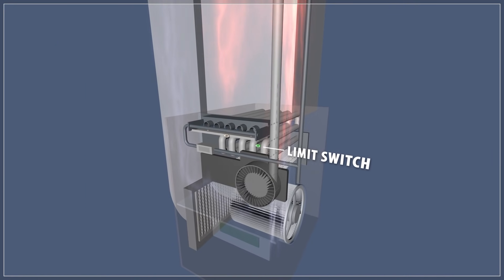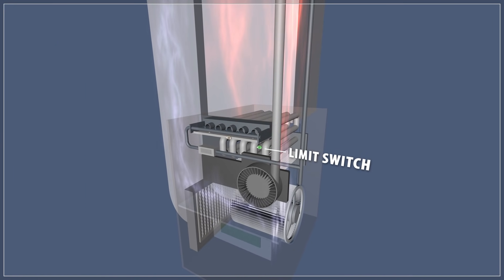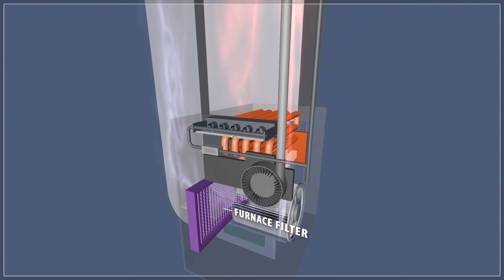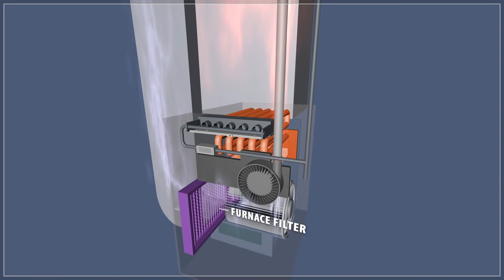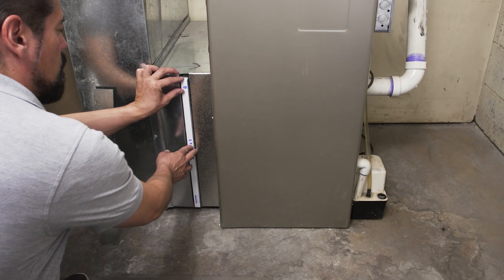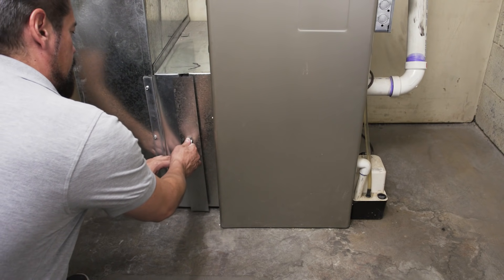The limit switch monitors the temperature of the air passing over the heat exchanger and will shut off the furnace if the system overheats. Any restriction of the airflow might cause the heat exchanger to overheat. This is why it's essential to replace the furnace filter every three to six months.